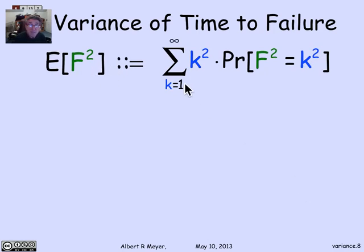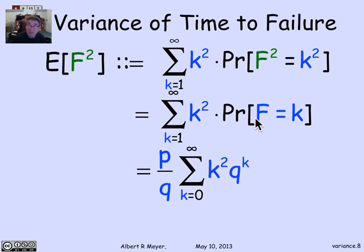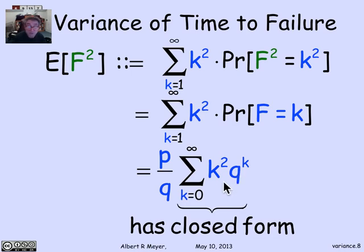The probability that F² equals k² is the same as the probability that F equals k, which is q^(k-1) times p. Factoring out p/q, this simplifies to the sum from k=0 to infinity of k² times q^k. This is a kind of sum we've seen before with a closed form. We could calculate E[F²] using generating function information, then subtract 1/p² since the variance equals E[F²] minus (E[F])². But let's use total expectation instead.